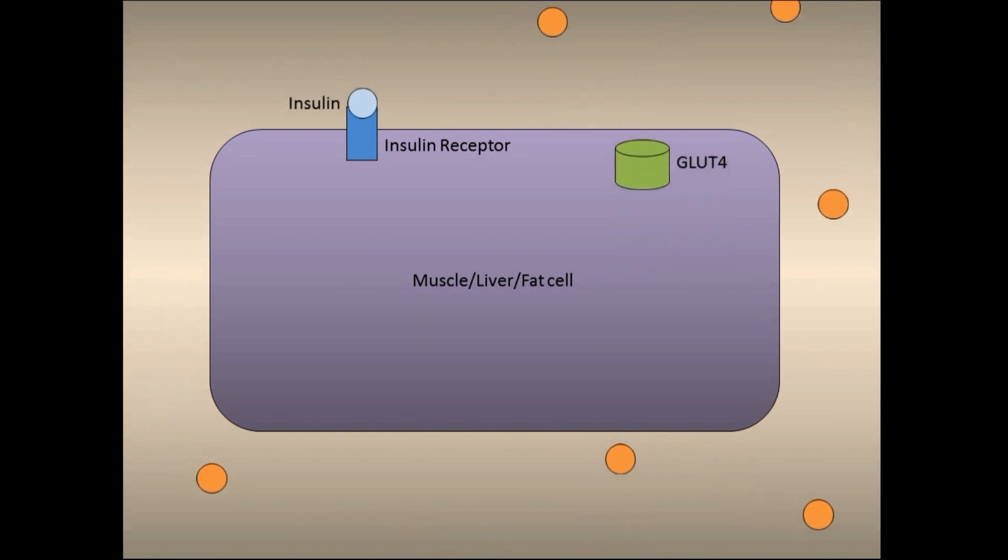When GLUT4 is activated, it migrates from inside the cell to the cell surface, allowing glucose to enter into the cell.